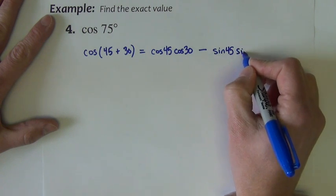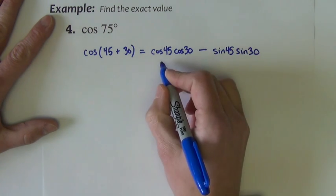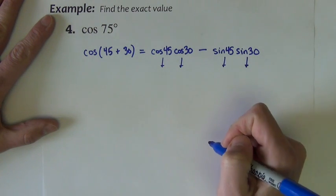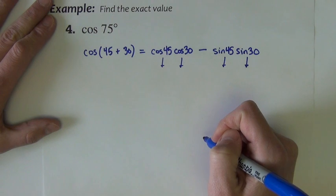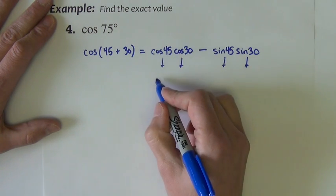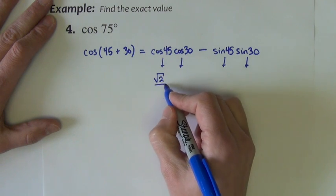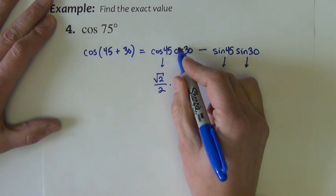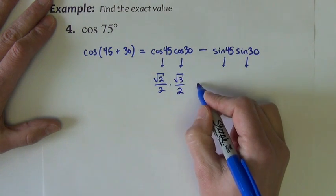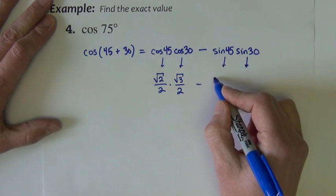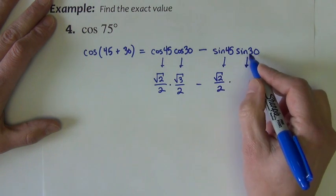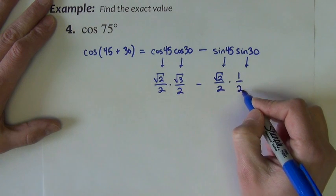Now, each of these, again, are values that can directly be found from our unit circle. Cosine 45 is square root of 2 over 2. Cosine 30, square root of 3 over 2. Sine 45, square root of 2 over 2. Sine 30 is 1 half.